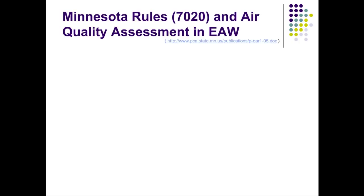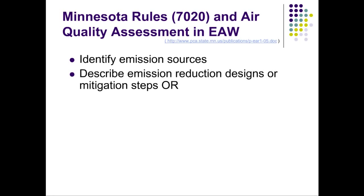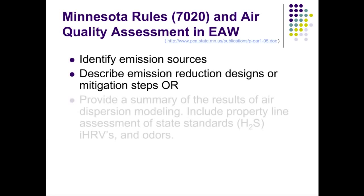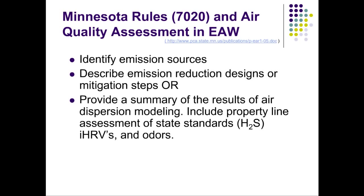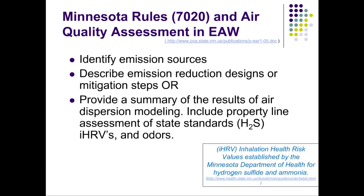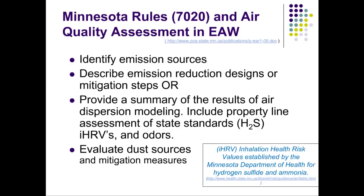The Minnesota permitting process for CAFOs includes requirements for meeting air quality standards. The State Feedlot Rule, Chapter 7020, requires CAFOs to identify emission sources on the farm. They must then either devise emission reduction strategies or model the site's potential emissions to help ensure compliance with hydrogen sulfide standards and Minnesota health risk values for ammonia. Odor emissions and related nuisance issues, along with dust emissions, are also addressed in Chapter 7020.